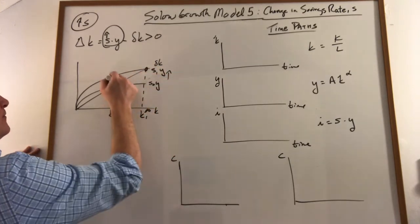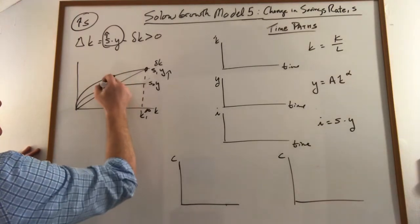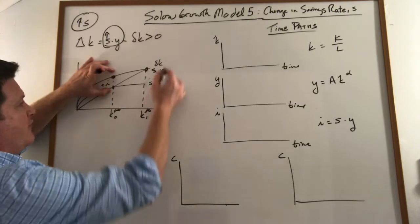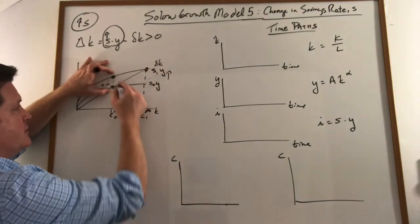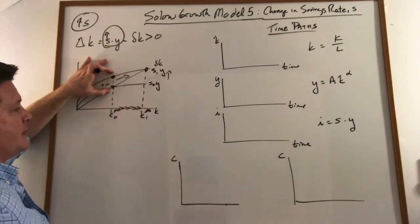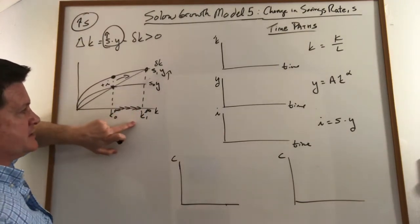Over time, we've got additional investment above what is required to offset depreciation. So we begin accumulating capital and our capital stock slowly rises over time.